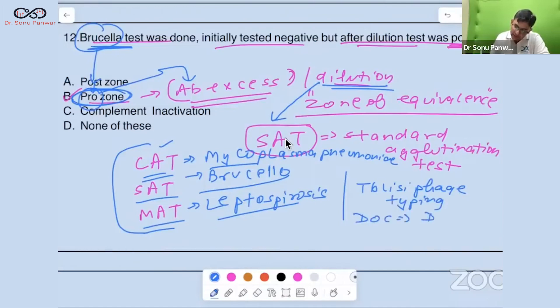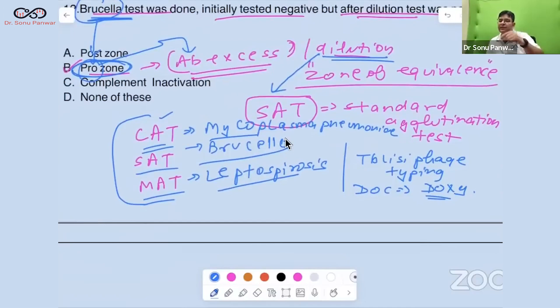Rose Bengal Card Test and these tests were done for Brucella contamination of milk. Rose Bengal Card Test, Milk Ring Test, Weil Agglutination Test - these all are being done for Brucella.